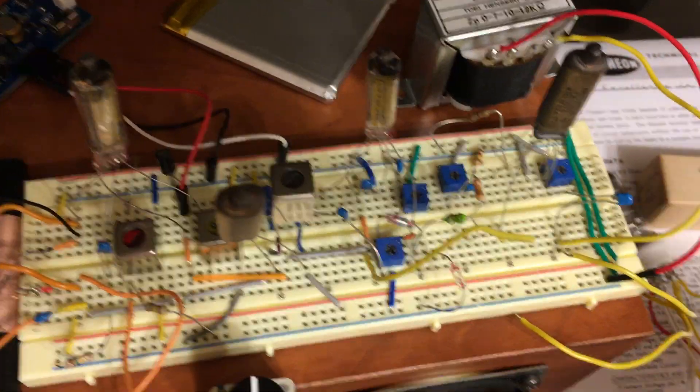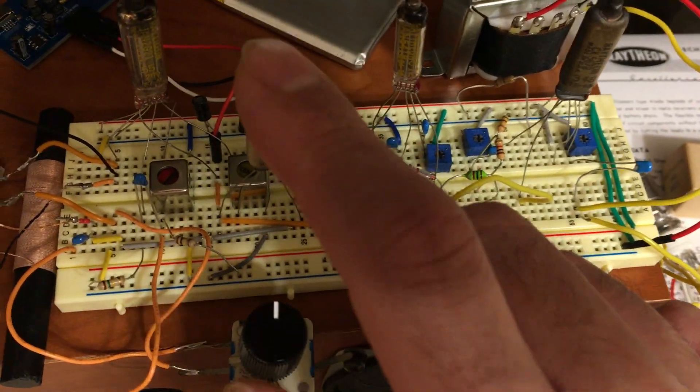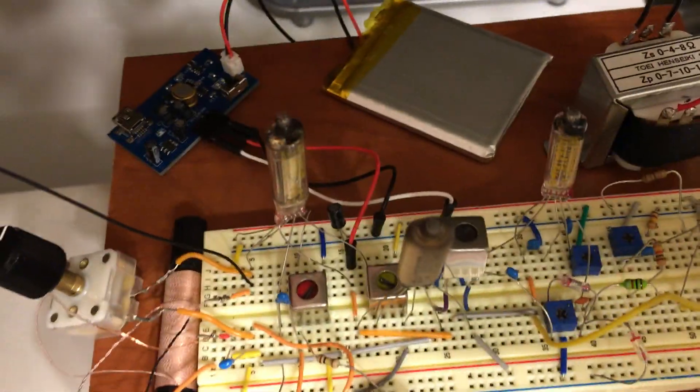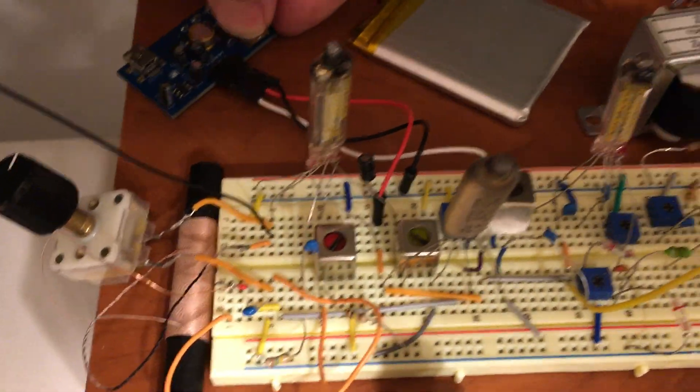As you see, all of the vacuum tubes are now sub-miniature tubes. Now let's see how it works. I will switch it on.